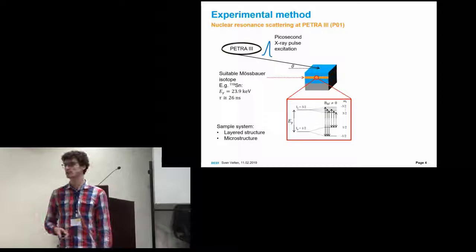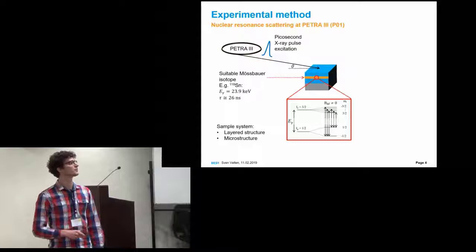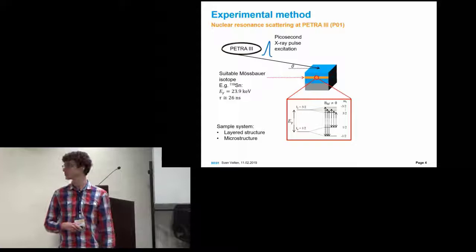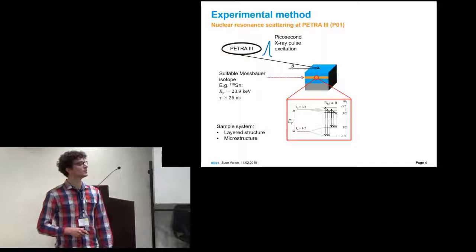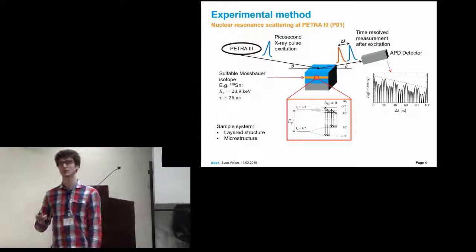Inside of the structure, we have a layer of the suitable Mössbauer isotope. In our case, it's 119 tin. We resonantly excite the first magnetic dipole transition at 23.9 keV. We might also have, for example, a magnetic hyperfine field present, and we get some energy line splittings. We then measure the time-delayed signal, the temporal response of the system, the decay.